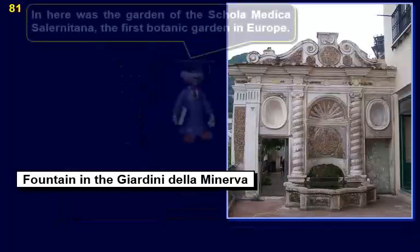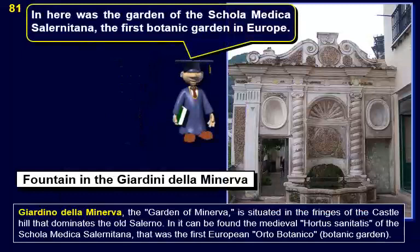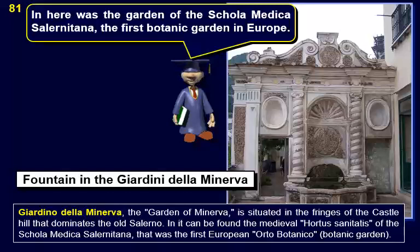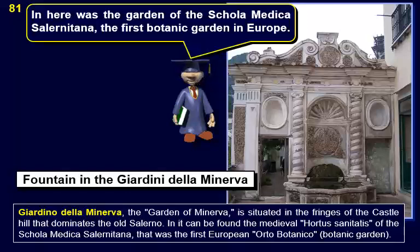The Giardino della Minerva — the Garden of Minerva — is situated in the fringes of the castle hill that dominates old Salerno. In it can be found the medieval Hortus Sanitatis of the Scuola Medica Salernitana, which was the first European Orto Botanico, or botanic garden.